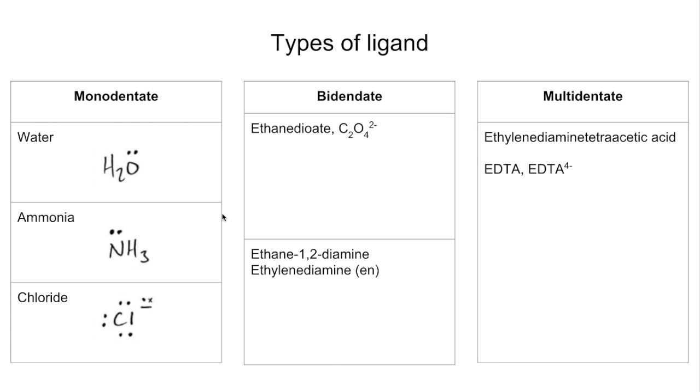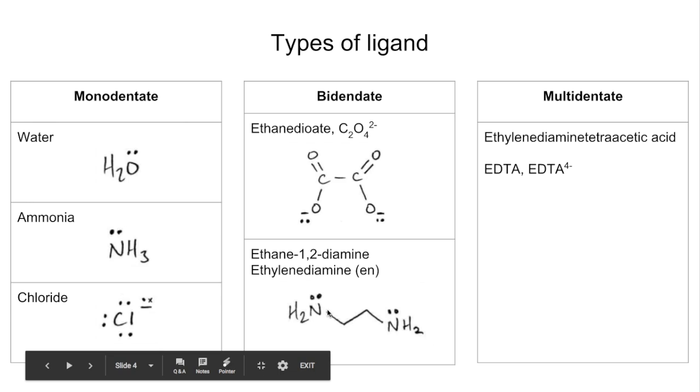We then move on to bidentate ligands. These can form two coordinate bonds. We've got two examples: ethanedioate, C2O4 2-, there's its formula, and that's what it looks like. The coordinate bonds are made via the O- part. You can see I'm showing the lone pair again. And next we've got ethane-1,2-diamine, or ethylenediamine, or even just EN for short. That's what that looks like there. We've got NH2 groups at the end of the carbon chain. We've got two carbons in the chain: NH2, CH2, CH2, NH2. So again you can see we've got two nitrogens, each one has a lone pair on, so you can form two coordinate bonds with a central transition metal ion.